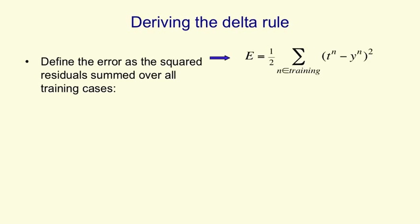Now we're going to derive the delta rule. We start by defining the error measure, which is simply our squared residual summed over all training cases. That is the squared difference between the target and what the linear neuron predicts, squared and summed over all training cases. We put a half in front, which will cancel the two when we differentiate.